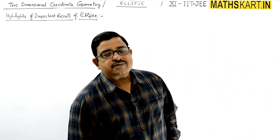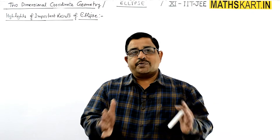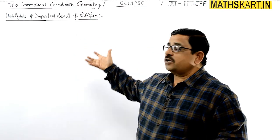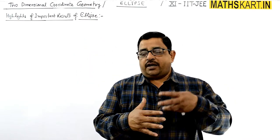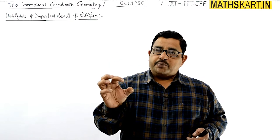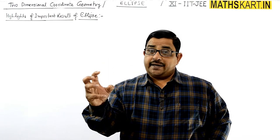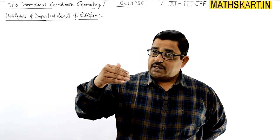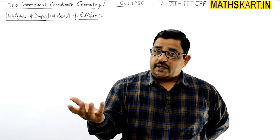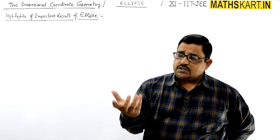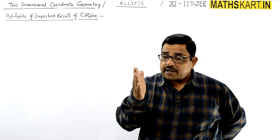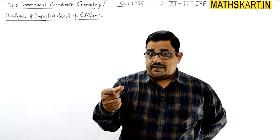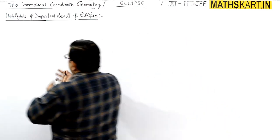Good morning friends. Our ellipse chapter is almost complete. Our last important task is to cover the highlights of important results of the ellipse. These are the key points from which important questions can be created. If you remember these highlights and results, you can directly write them down. Otherwise, you have to evaluate everything. So let's start them one by one.